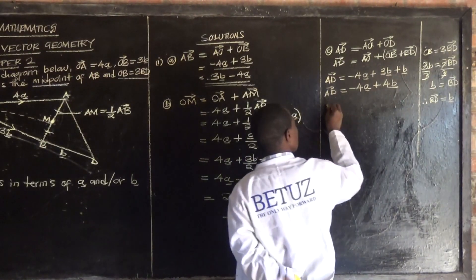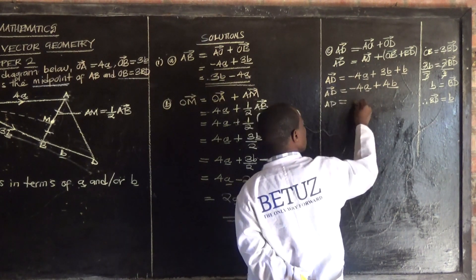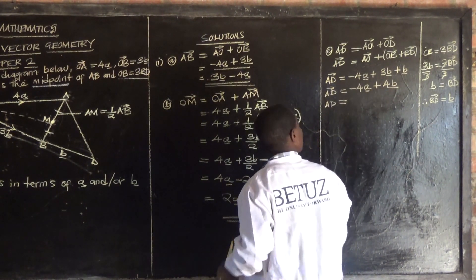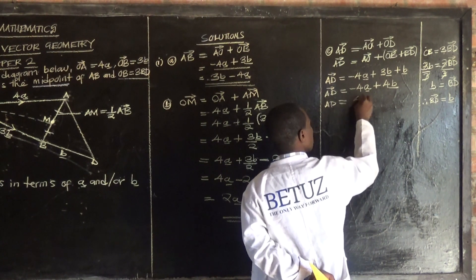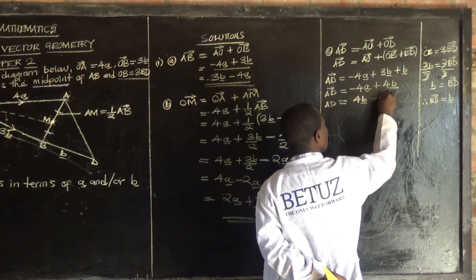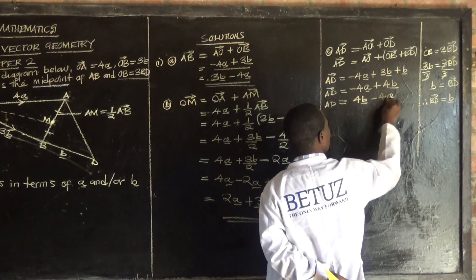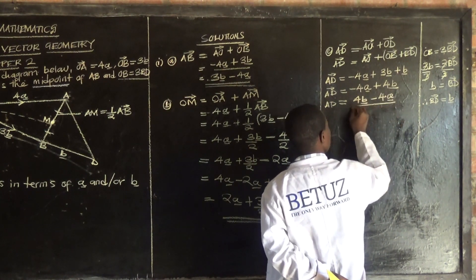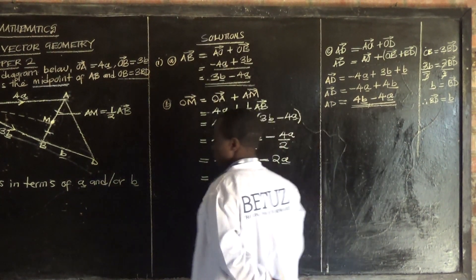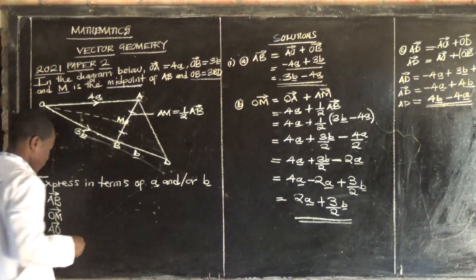AD equals 4 vector b minus 4 vector a. You can start with the positive: 4b minus 4a. This is your answer.